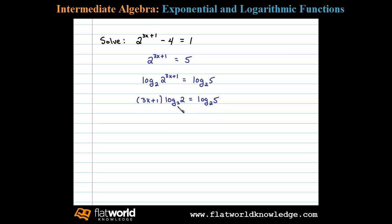Now at this point you can see why I chose log base 2 — the log base 2 of 2 is 1, and 1 times this quantity is just that quantity. So we have 3x plus 1 equals log base 2 of 5.